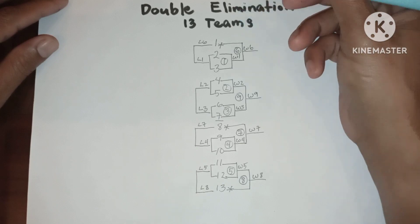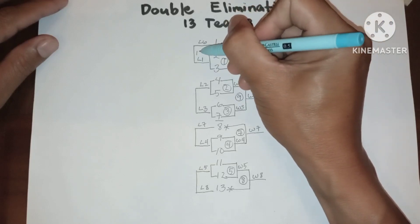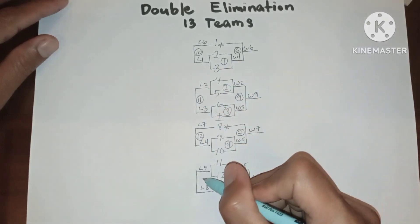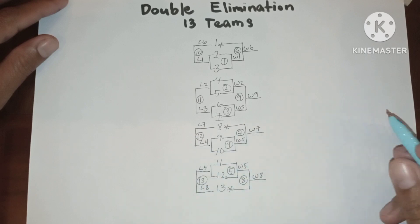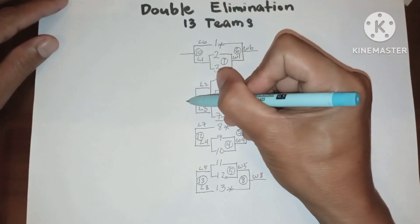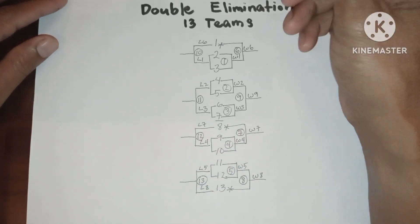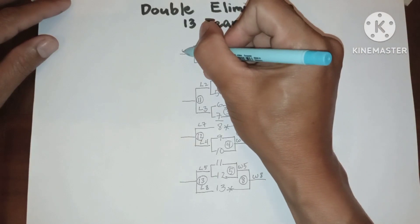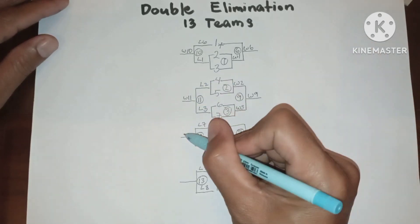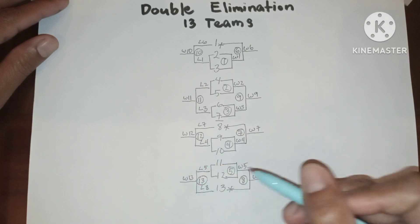Let us have the game number. This is game 9, so this will be game 10, game 11, game 12, and game 13. Let us have the result: winner 10, winner 11, winner 12, winner 13.